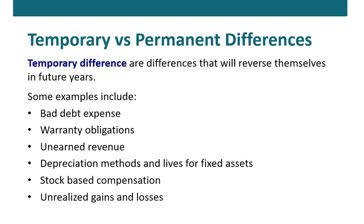Other differences involve depreciation methods that can be different for both GAAP and tax purposes, as well as the lives of our fixed assets, stock-based compensation, and unrealized gains and losses that are recorded for GAAP purposes but not for tax purposes. These are just a few of many different types of temporary differences, and it is these temporary differences that will give rise to deferred tax assets and deferred tax liabilities.